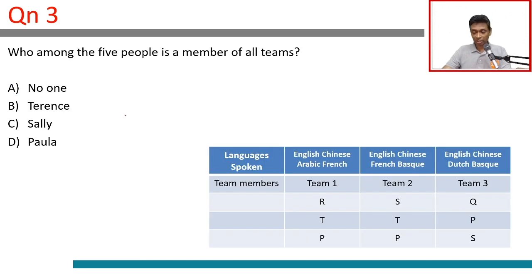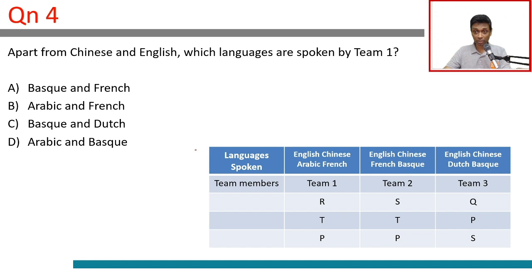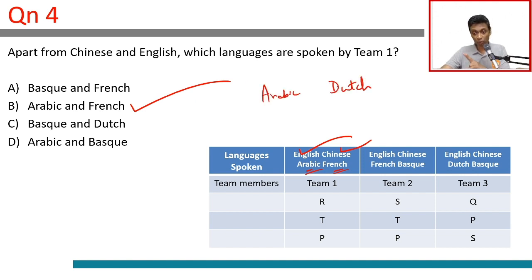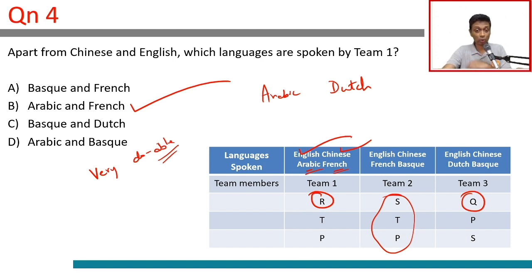Who among the 5 people is a member of all teams? Paula is a member of all 3 teams. Apart from Chinese and English, which languages are spoken by team 1? Arabic and French — that's the answer. The key here is to start with Arabic and Dutch, each spoken by only 1 team, which pins down Robert and Quentin's team membership. Once you figure out there are 3 members per team and crack the languages, the teams write themselves out methodically. Very doable — keep your wits with you, these kinds of questions are very solvable.